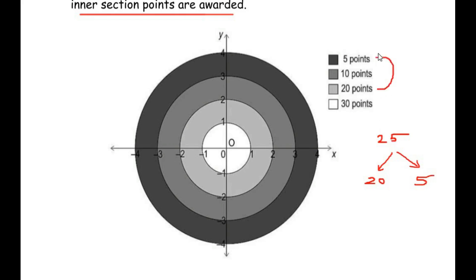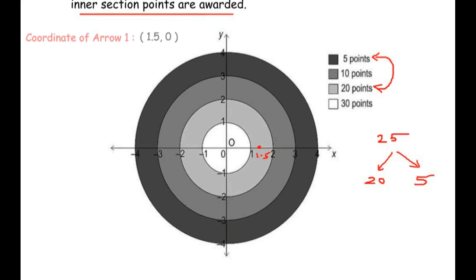The only combination that gives us 25 is 20 points and 5 points. I am assuming the first arrow hit the 20-point region. You can choose any point in this region. Choose an easier coordinate — I am going to take a point exactly in between 1 and 2 on the x axis. So the coordinate of arrow 1 is (1.5, 0), since it is on the x axis the y coordinate is 0. This gives a score of 20 points. Remember, you can choose any point in this area.